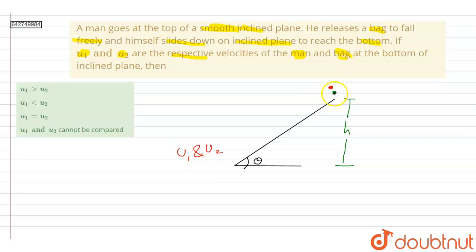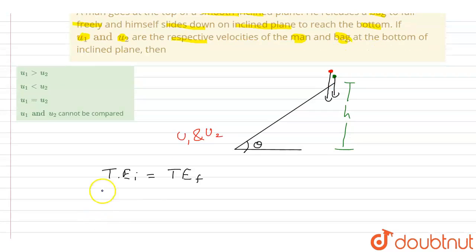Now here we can see that only the gravitational force acting on both the bodies will be responsible for the sliding motion on this inclined plane, and we know that gravitational force is a conservative force. That means here I can apply the law of conservation of energy. Total energy at initial point will be equal to total energy at final point.